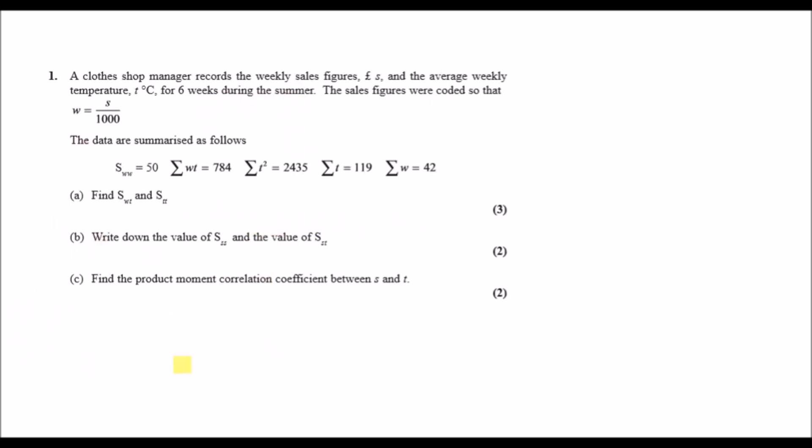The sales figures were coded such that W equals S over 1000. So what this means is that for one unit of W we should get 1000 units of S, or for one unit S you get 1 over 1000 W.